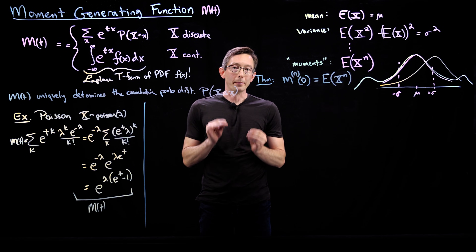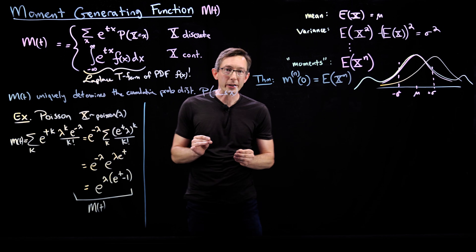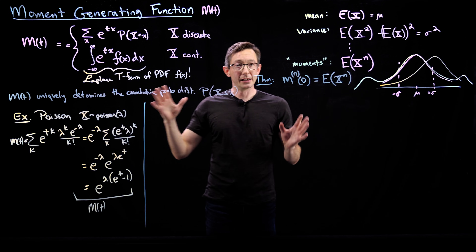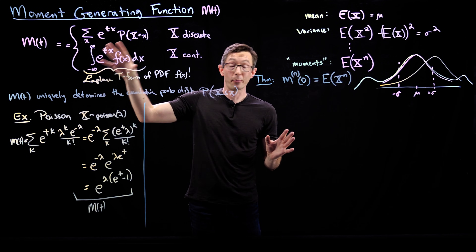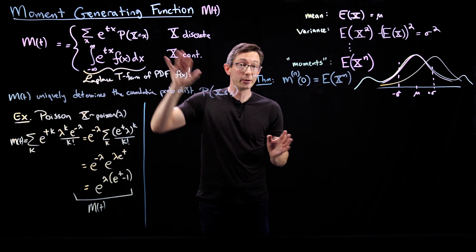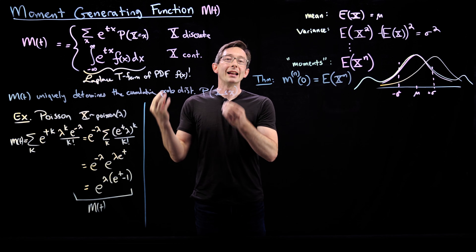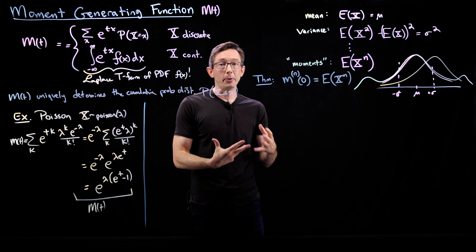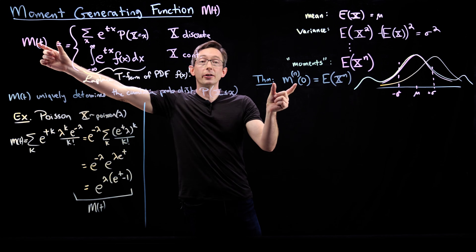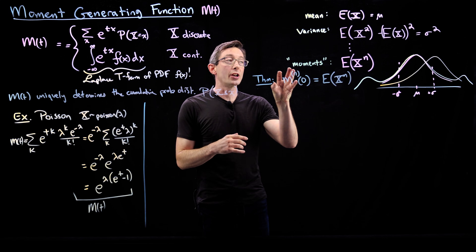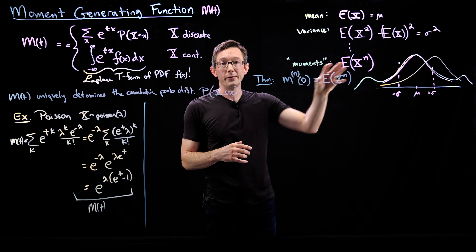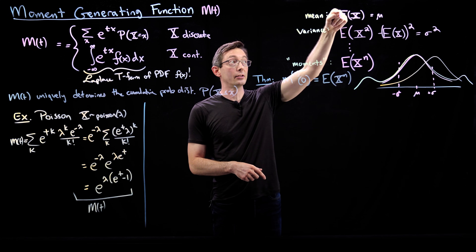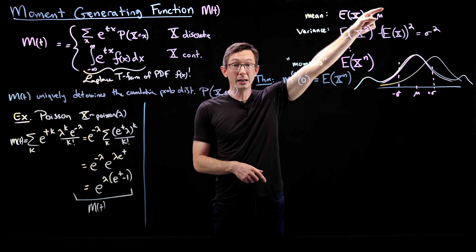Welcome back. Last lecture we introduced the moment-generating function m, which is the Laplace transform of the probability density function for a continuous random variable x. It has the very powerful property that this moment-generating function m can be used to generate all of the moments of your probability distribution. The first moment, the expectation of x, is related to your mean.